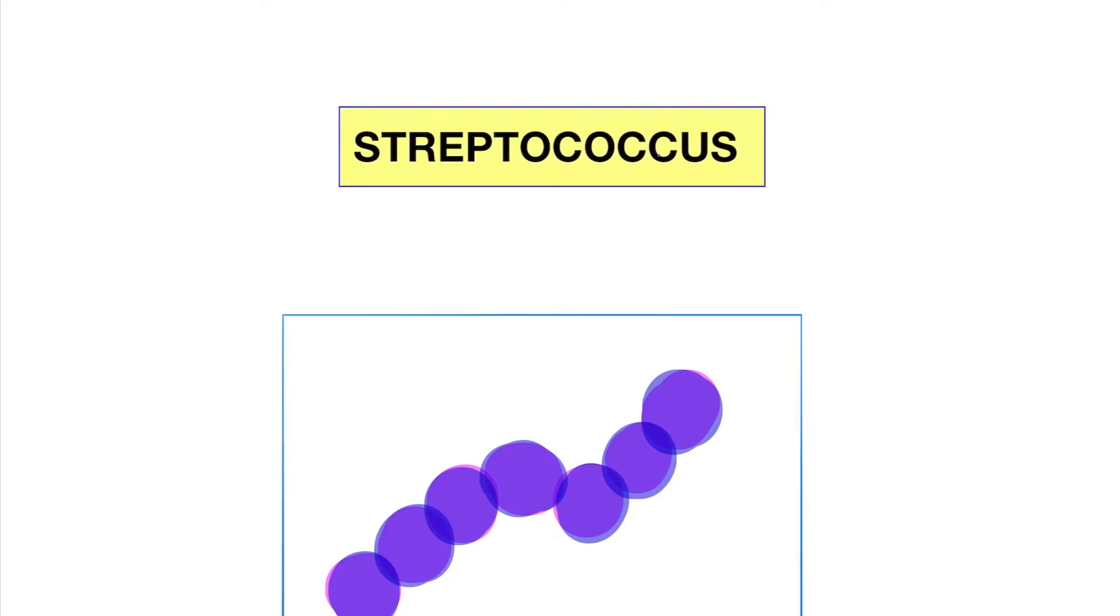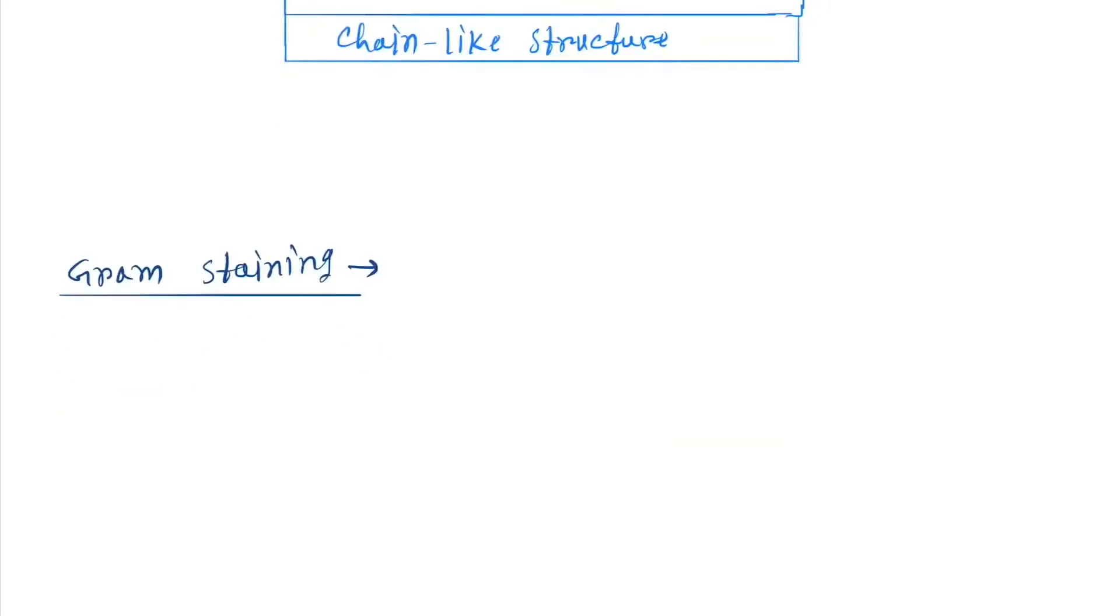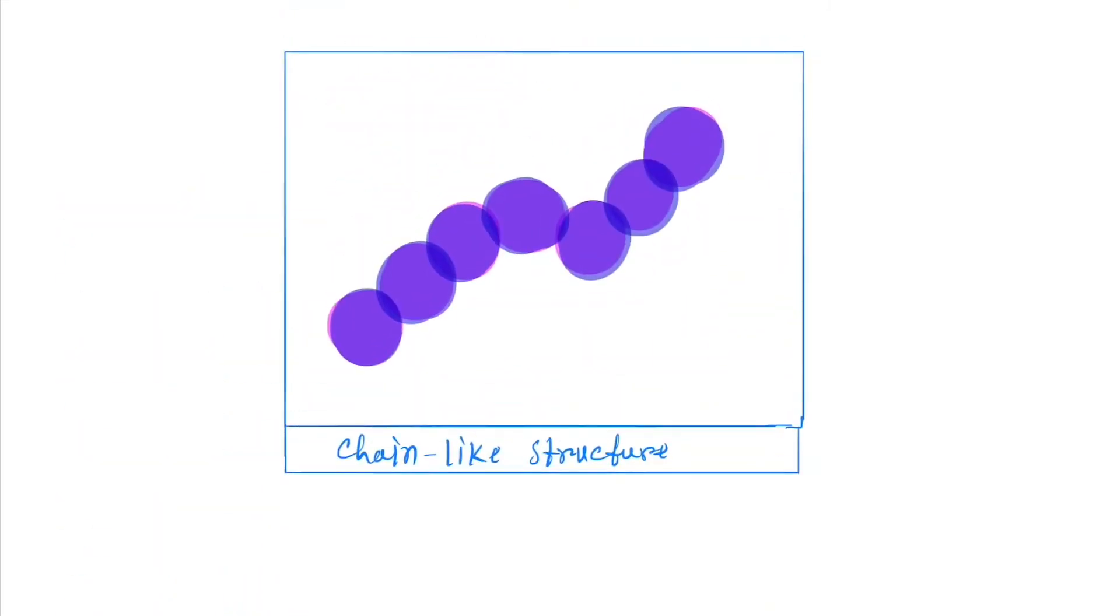Okay, hello friends. Today our topic is Streptococcus, the gram-positive cocci. First one is Staphylococcus and next one is Streptococcus. If we do the gram staining, then we'll see under microscope. Here you can see a chain-like structure is formed.